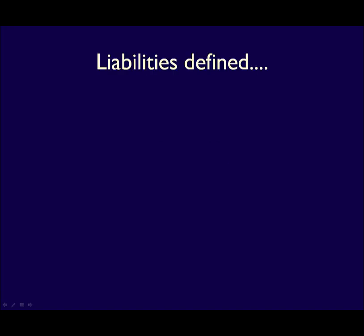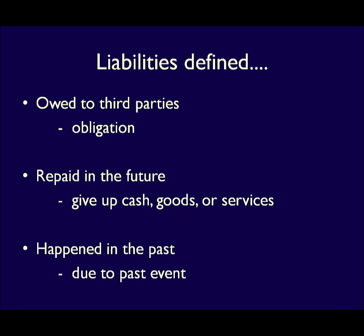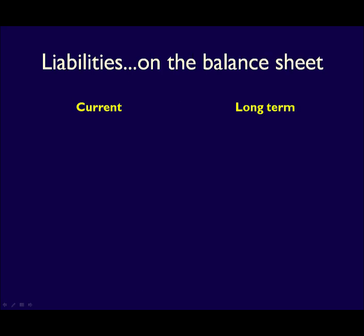Companies often use liabilities to get their assets — they take on debt in order to increase their assets. Liabilities also have three characteristics: they are owed generally to a third party outside of the business; they will be settled in the future by giving up cash, goods, or services; and they are due to past events, meaning the obligation already exists. Like assets, liabilities are divided into subcategories — current and long-term — to provide useful information to stakeholders.